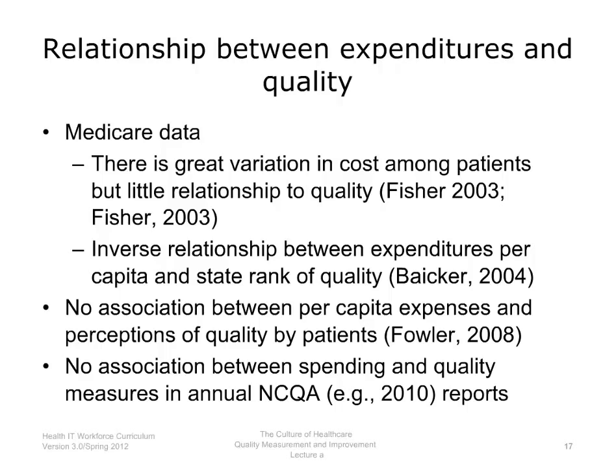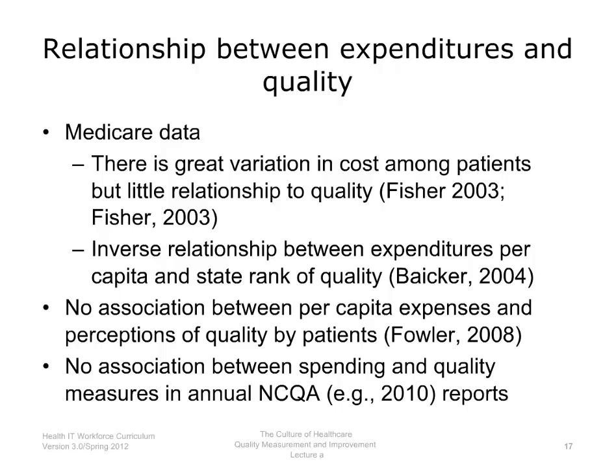This concludes Lecture A of Quality Measurement and Improvement. In summary, health care quality is defined as the best possible delivery of care and its resulting outcomes. There are three major types of quality measures: structural, process, and outcome measures. The current state of health care quality in the United States shows significant gaps between care as delivered and the best possible delivery.